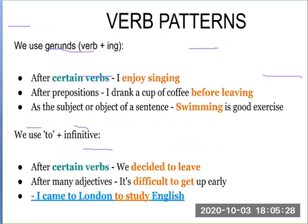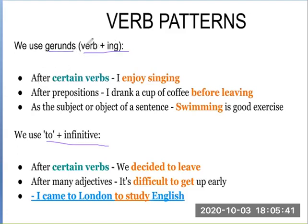There are some verb patterns. Verb plus -ing is also known as a gerund. These gerunds are used after certain verbs. For example: I enjoyed singing. Here the verb is 'sing' plus -ing, giving 'singing.' Gerunds are used after certain verbs.